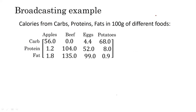Let us take this example: we have a three-by-four matrix — it has three rows and four columns. This matrix gives us information about the calories from carbs, proteins, and fats in 100 grams of different foods. For example, 100 grams of apples — how many calories do we gain from carbs, proteins, and fats? This has been clearly mentioned in this matrix.